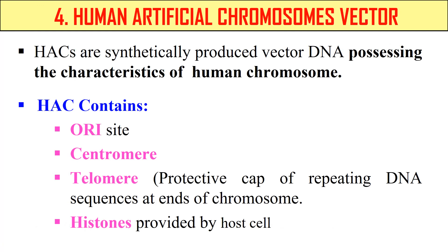Next are Human Artificial Chromosomes (HAC). These are artificially produced DNA molecules which behave like normal human chromosomes. The HAC contains an origin site necessary for replication, a centromeric region, telomeric region, and histone region. So that covers all artificial chromosomes: Bacterial Artificial Chromosome, Yeast Artificial Chromosome, P1 Derived Artificial Chromosomes, and Human Artificial Chromosomes. That's all for today. Thank you very much.